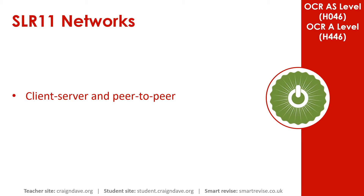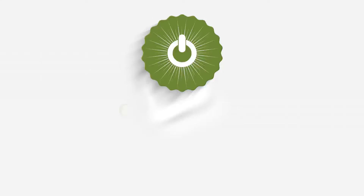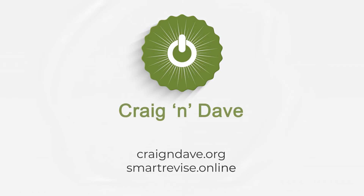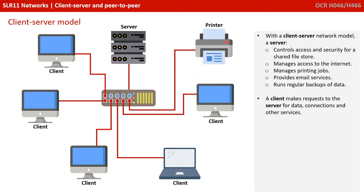In this video, we take a look at the difference between client-server and peer-to-peer networks. With a client-server network model, a server controls access and security for a shared file store. It manages access to the internet, manages printing jobs, provides email services, and runs regular backups of data.